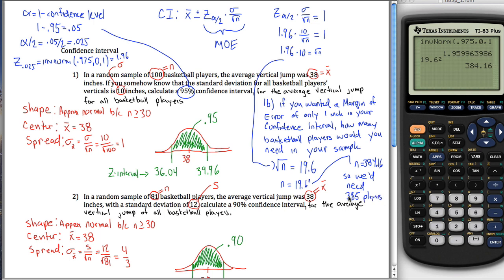There's a formula that will tell you what N is — basically it solves this same equation but with margin of error as a symbol instead of 1. You can use that formula if you really want to, but that's just one more formula to memorize. I kind of prefer doing it this way, because the margin of error has an intuitive meaning — I understand what it is, so I can just use a little algebra to get N.